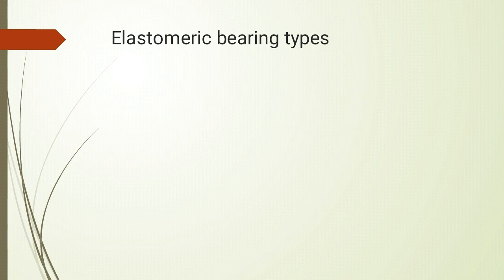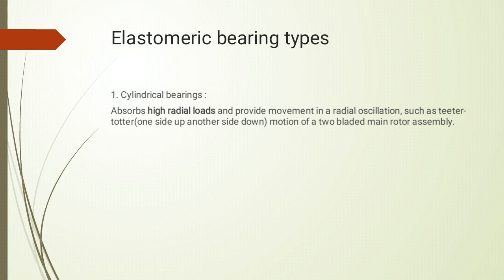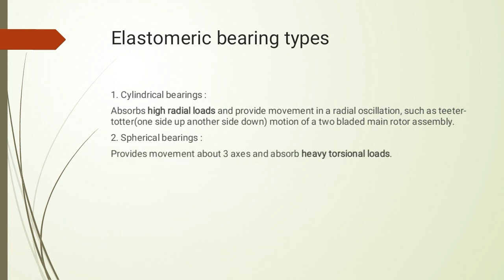Elastomeric bearings के तीन types हैं: cylindrical, spherical, और conical। Cylindrical bearing absorbs high radial loads and provides movement in radial oscillation — such as teeter-totter, one side up and another side down motion of a two-bladed main rotor assembly। Spherical bearing is used to absorb high torsional loads and provides movement about three axes — spherical bearing is preferred for tail rotor pitch change mechanism।